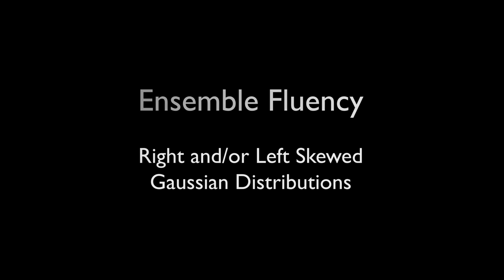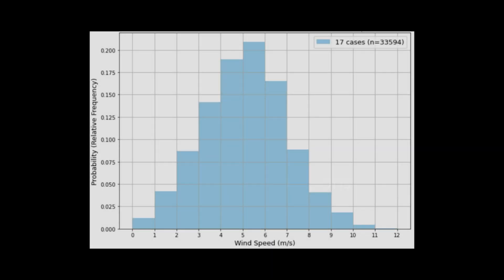So we know what a Gaussian, or normal, distribution looks like. The data is centered on a value with symmetric drop-off on both sides.